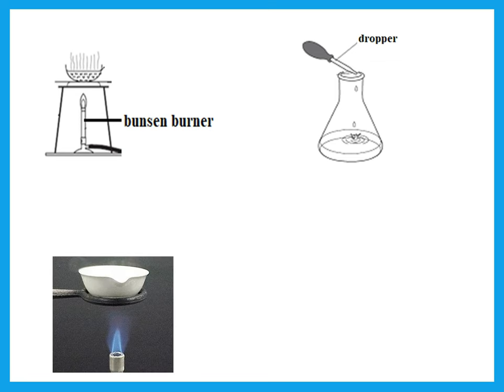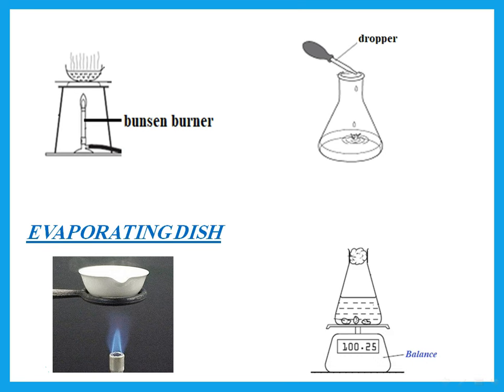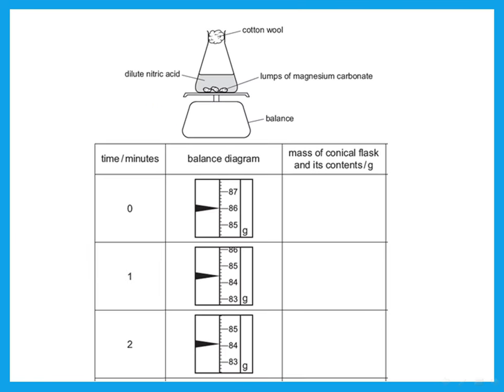This is a dropper to add drops of a liquid. This is an evaporating dish, which we use for heating solutions, such as during crystallization. This is a balance that we use to weigh anything. You should be familiar with reading a balance. When asked to read it and write results in a table, please read precisely, and notice that we do not put any units inside the table — the units are already written at the top of the table.